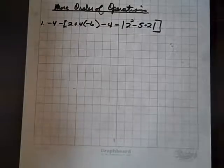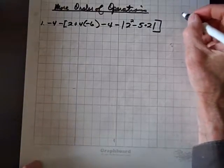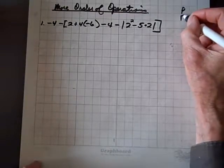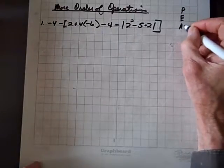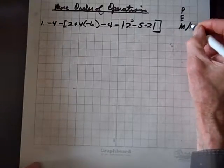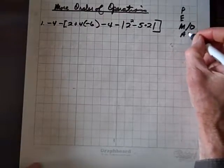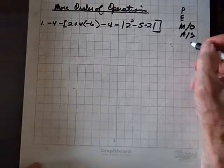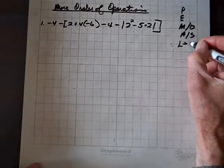Here we're going to do a couple more problems on the order of operations. Keep in mind the order of operations: Please for Parentheses, Excuse for Exponents, My Dear for Multiplication and Division, Aunt Sally — A for Addition, S for Subtraction — and you work left to right.